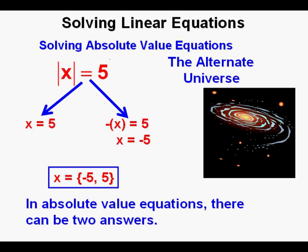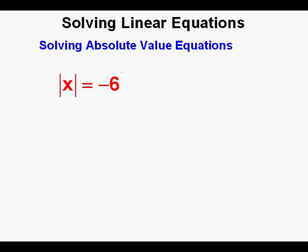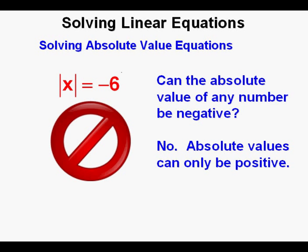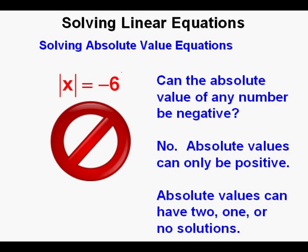This brings us to a key point of this lesson: in absolute value equations, there can be two answers, and most of the time there will be two answers. But consider the equation absolute value of x equals negative 6. Can the absolute value of any number be negative? No — absolute values can only be positive. Any time you isolate the expression in absolute value bars and have a negative number on the other side, you know that there is no solution.